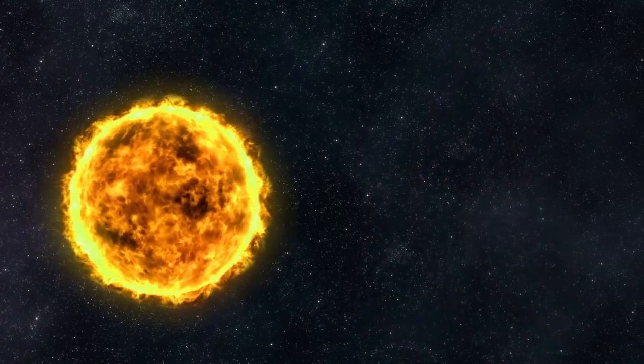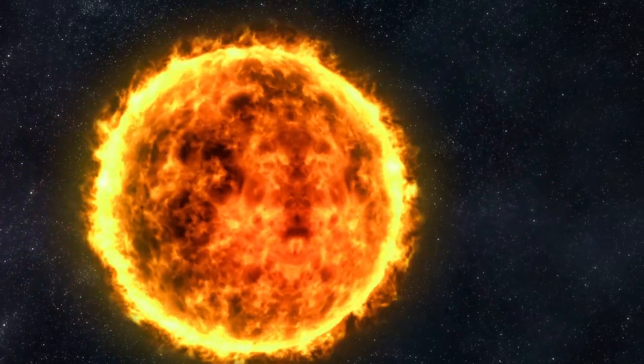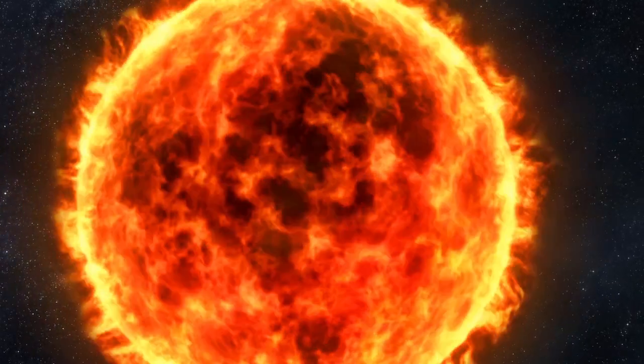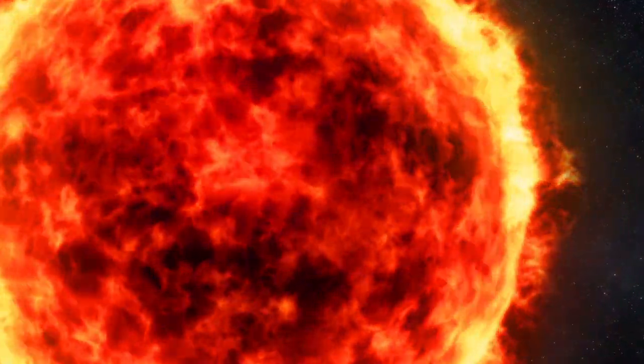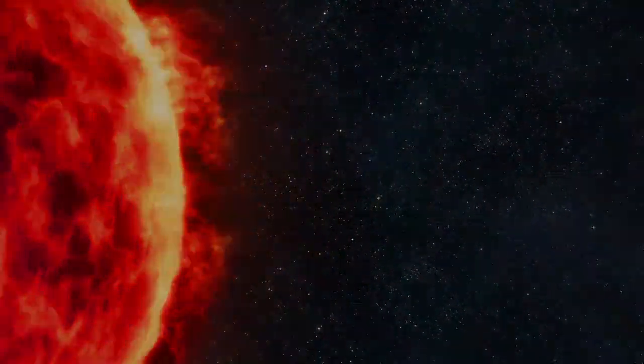During this process, the size, temperature, and composition change, but for every star a point is reached where the pull of gravity is no longer strong enough to keep fusion going. For most stars, once fusion stops, that's it. Because fusion is no longer generating an outward pressure, the star contracts under the force of gravity to about the size of the Earth.